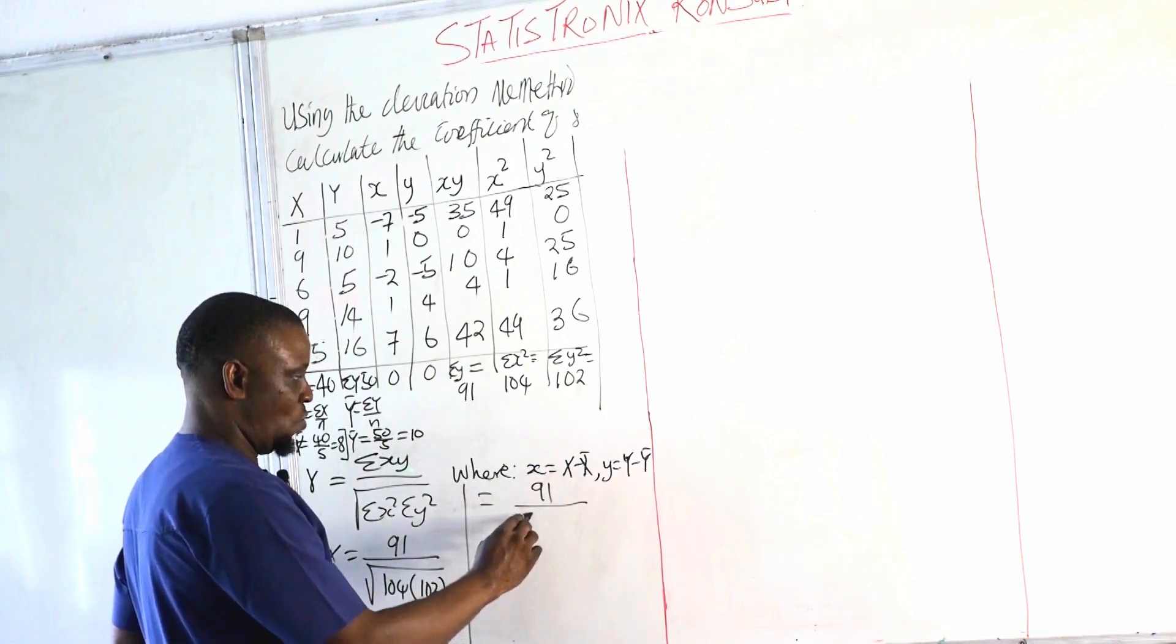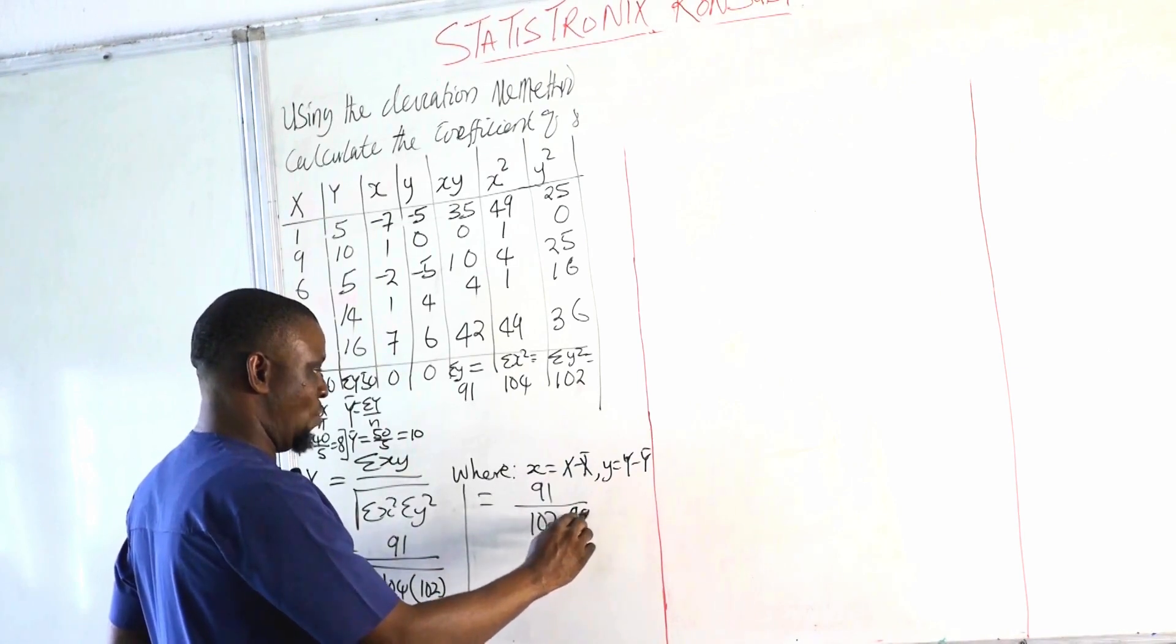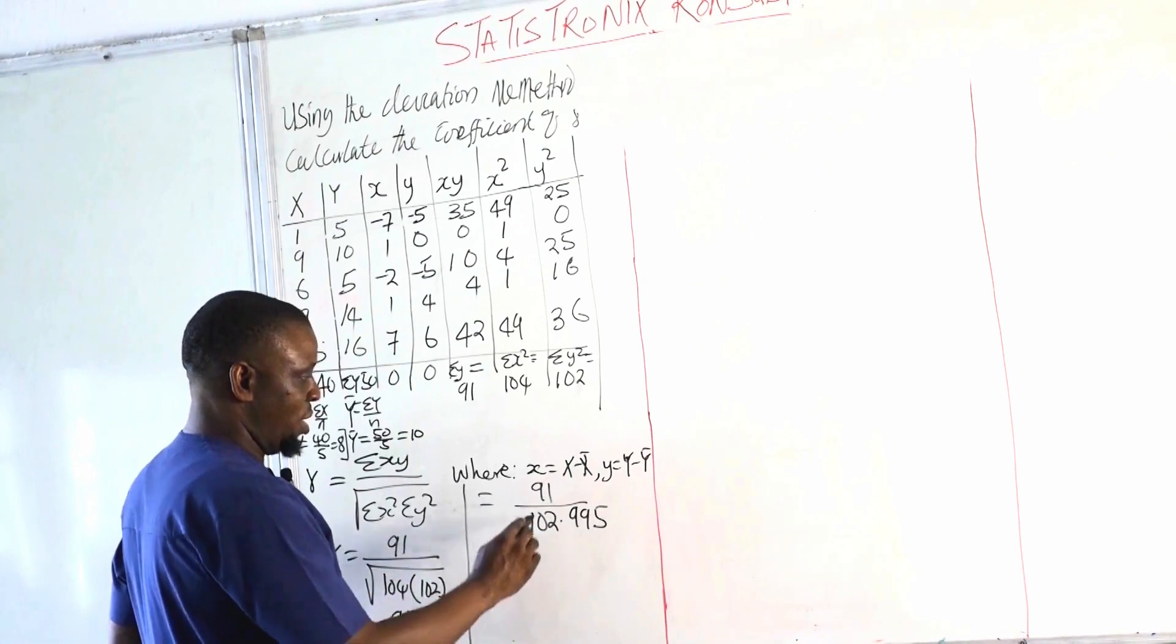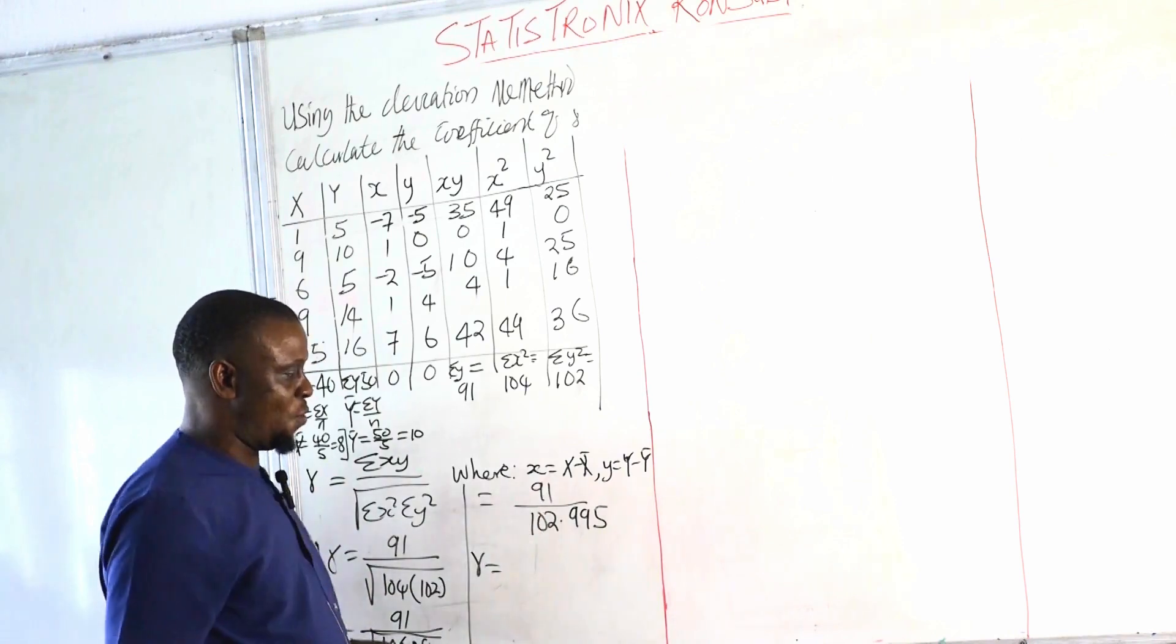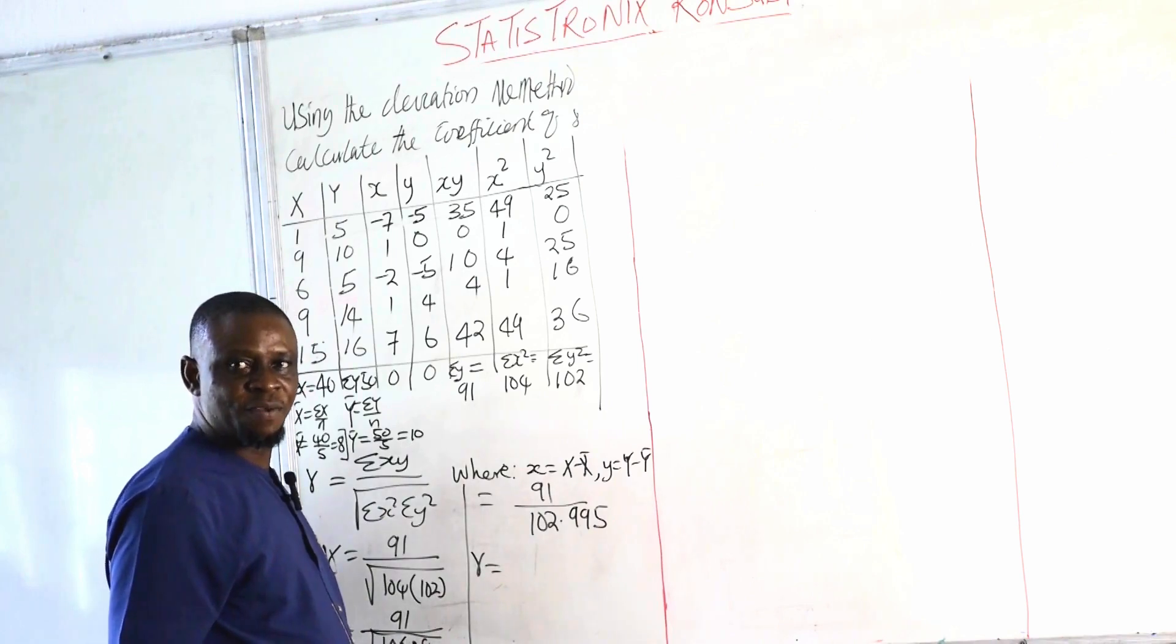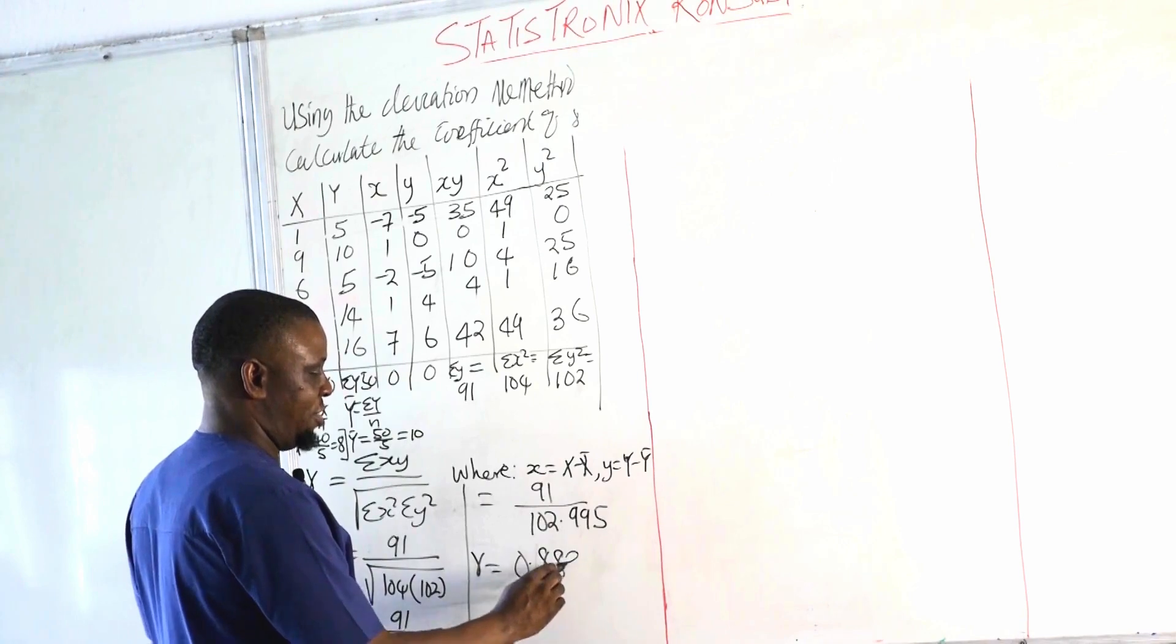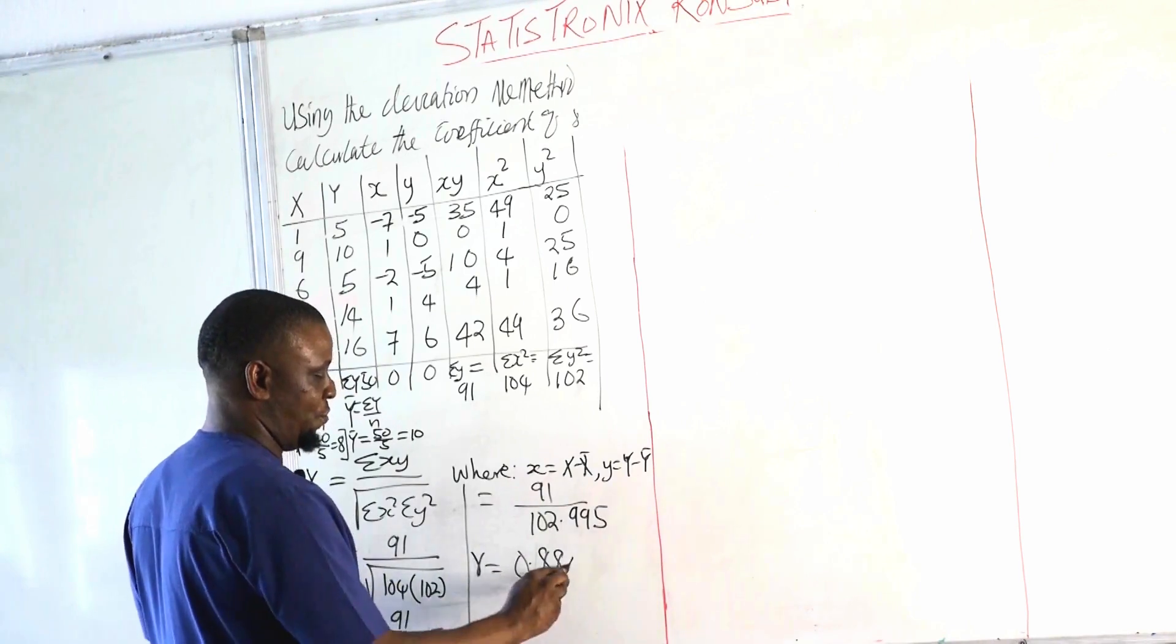So that will be equal to 91 over, what's the square root of 10,608? 102.995. So this will be equal to our r value will be equal to 91 over 102.995, so this is 0.8835, which is approximately 0.884.